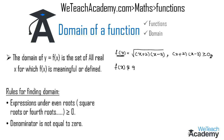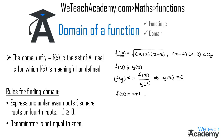If f(x) and g(x) are two functions, then f/g(x) = f(x)/g(x). For example, if f(x) = x+1 and g(x) = x-1, then f(x)/g(x) = (x+1)/(x-1), which is defined only when the denominator x-1 is not equal to 0.